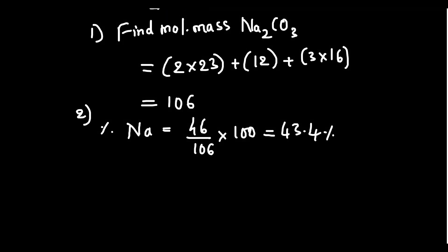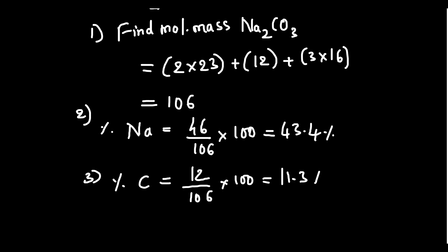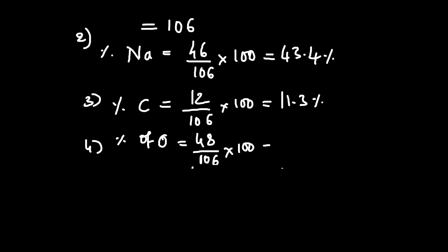Percentage of carbon = (12 ÷ 106) × 100 ≈ 11.3%. Percentage of oxygen: there are 3 atoms × 16 = 48, so (48 ÷ 106) × 100 ≈ 45.3%.